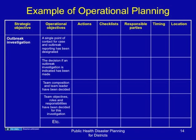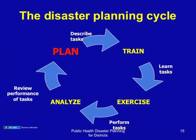The planning cycle involves planning — in which we describe the tasks; training — in which we learn the tasks through meetings, consensus-building sessions, and negotiations; exercises — in which we perform the tasks and test them with respect to scenarios; and analysis — in which we review performance of these tasks with respect to the exercises or disasters that have occurred. Then we plan again or improve the plan.